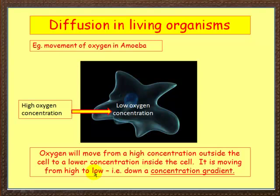The oxygen is moving down what we call a concentration gradient. This is a key feature of diffusion — particles move from a high concentration to a low concentration, whether it's oxygen or any other kind of particle. Think of low concentration as the bottom of the gradient, with substances moving down from high to low.